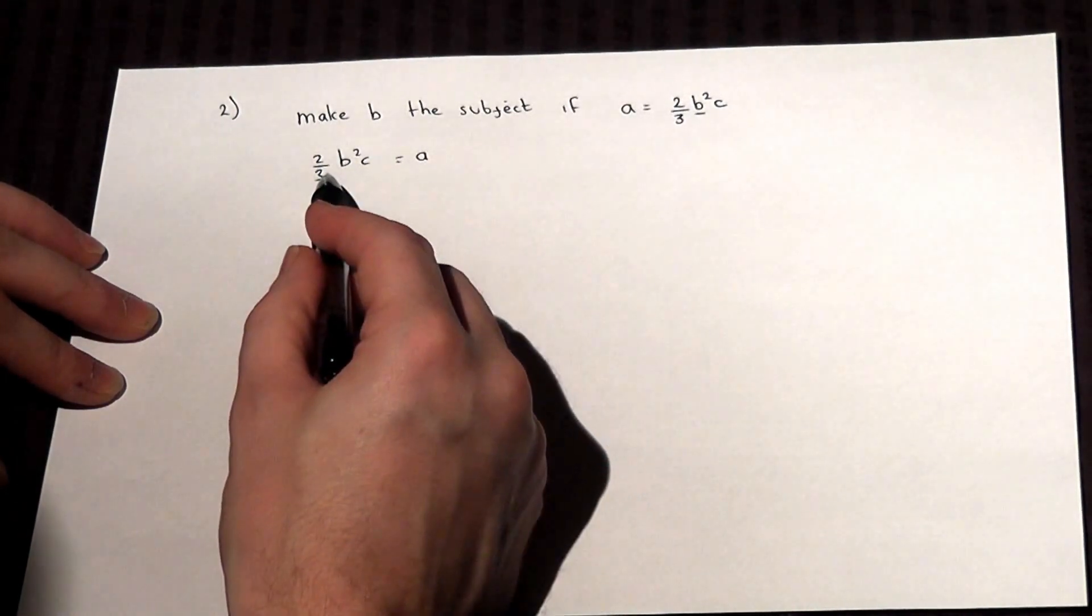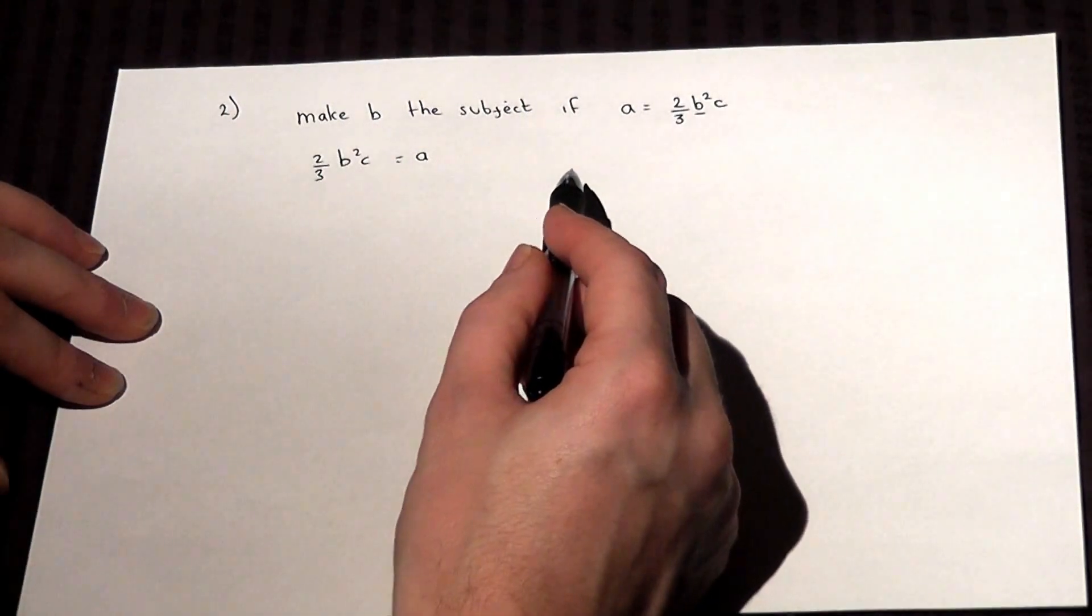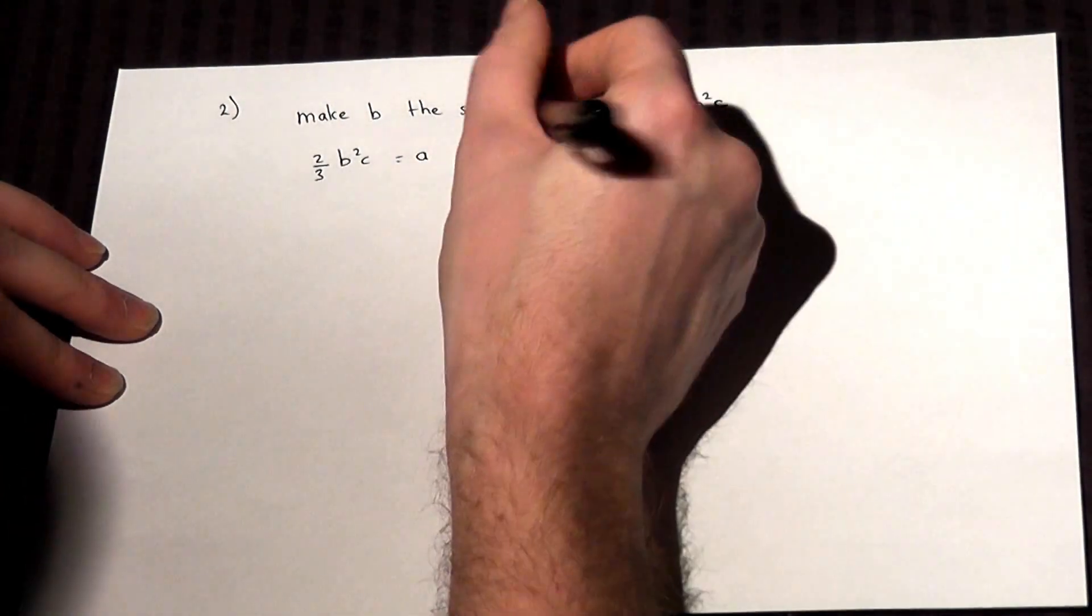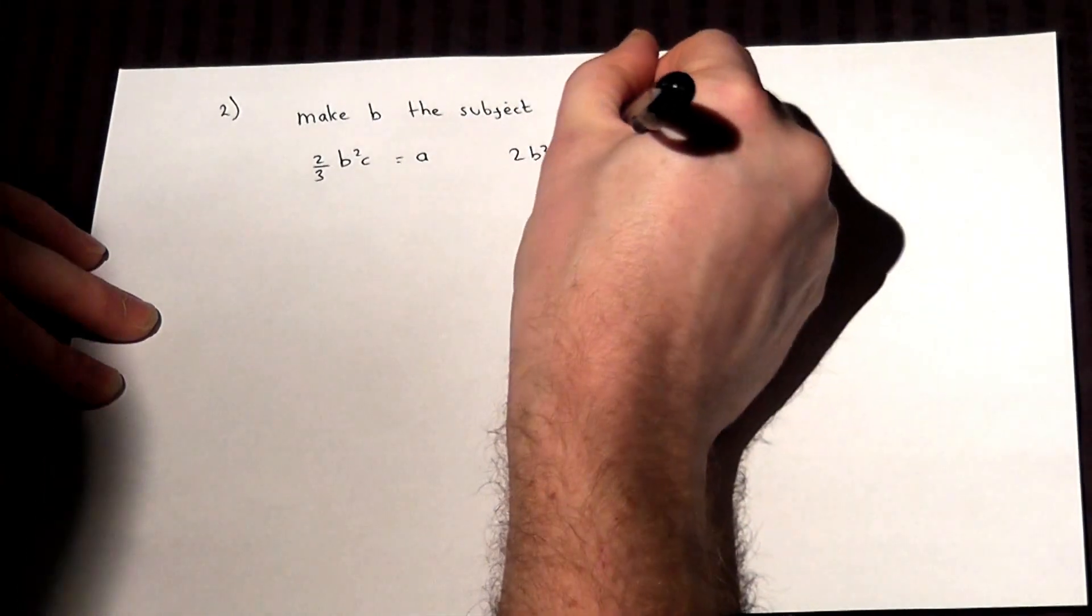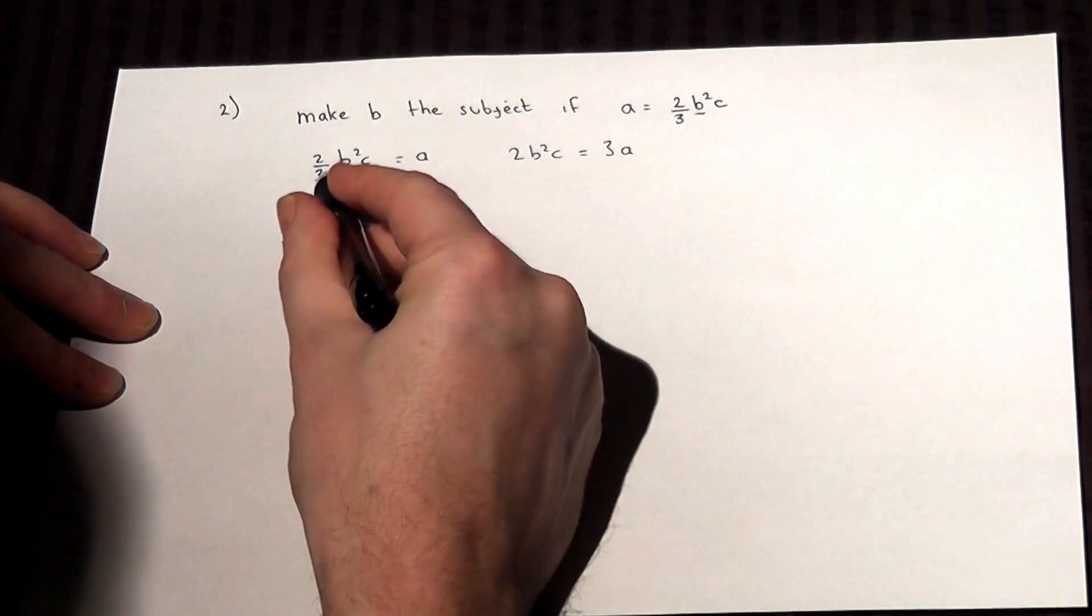And the trick is to rearrange the other bits around it first. So if I begin by multiplying by 3, I'll get 2B squared C is equal to 3A. So I've multiplied up by the 3.